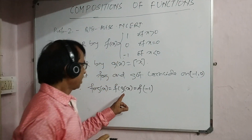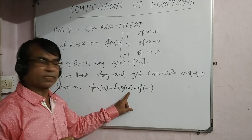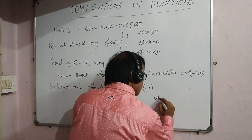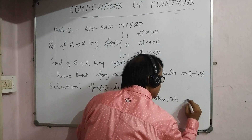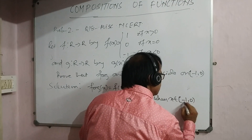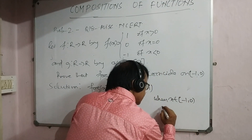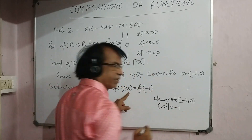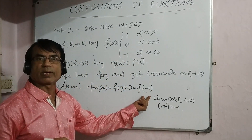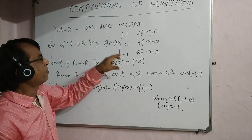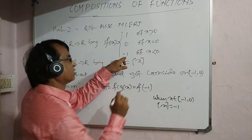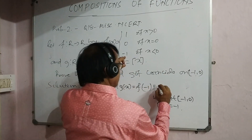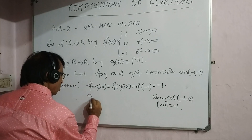Now, f(g(x)): when x belongs to [−1, 0), the greatest integer of x is equal to minus 1, so g(x) = −1. Then f(−1) = −1 because minus 1 is less than 0. Now coming to g(f(x)).